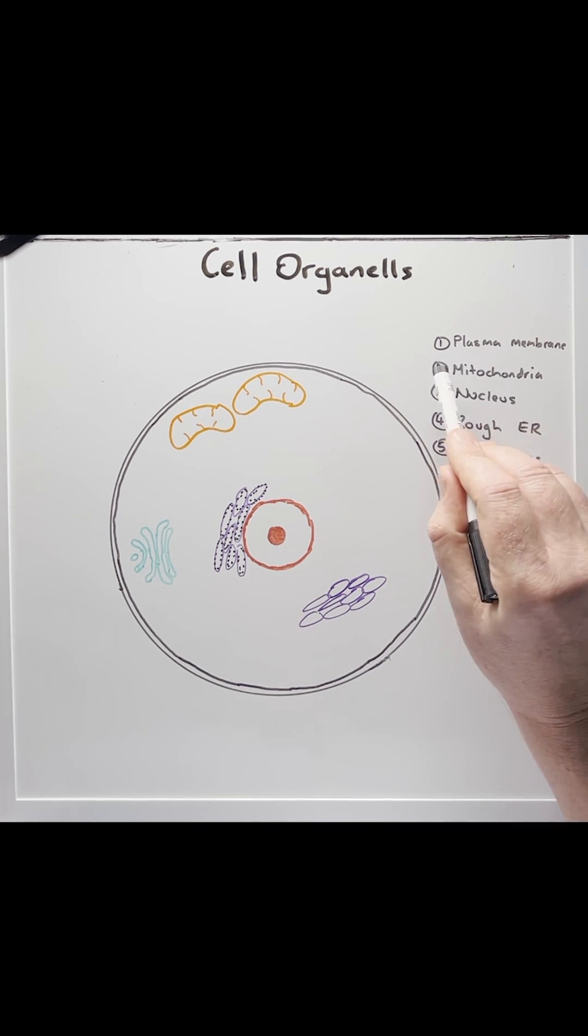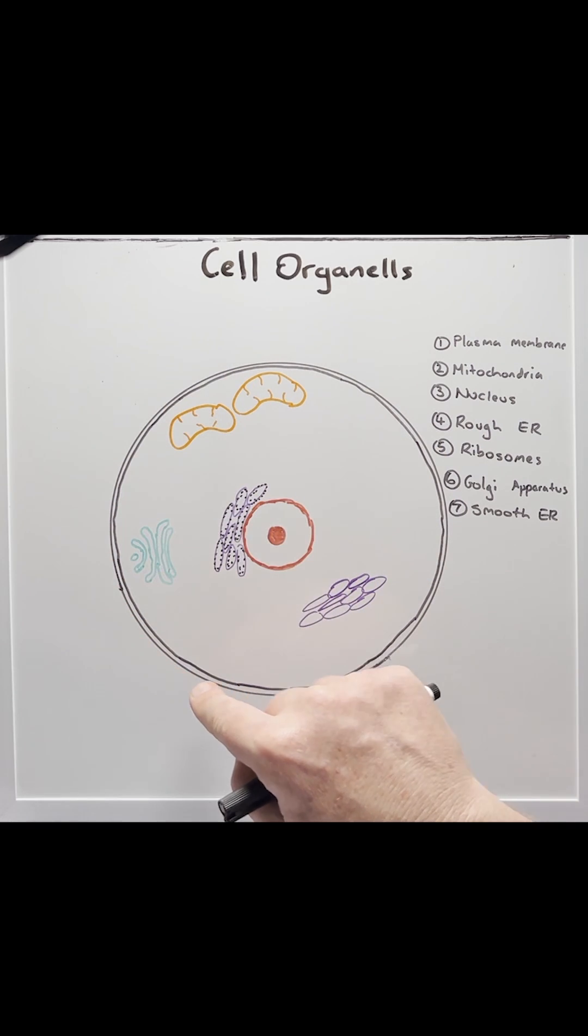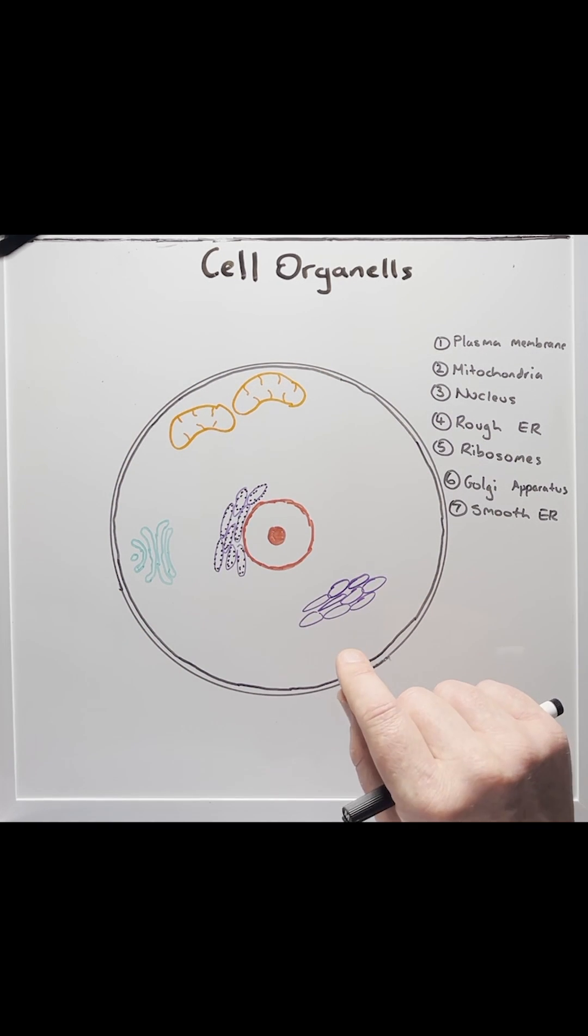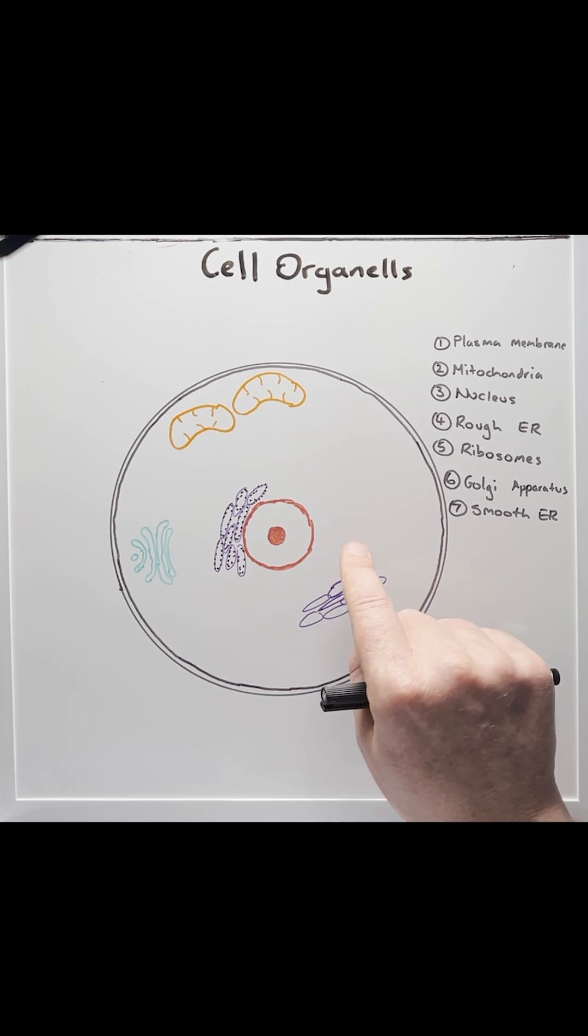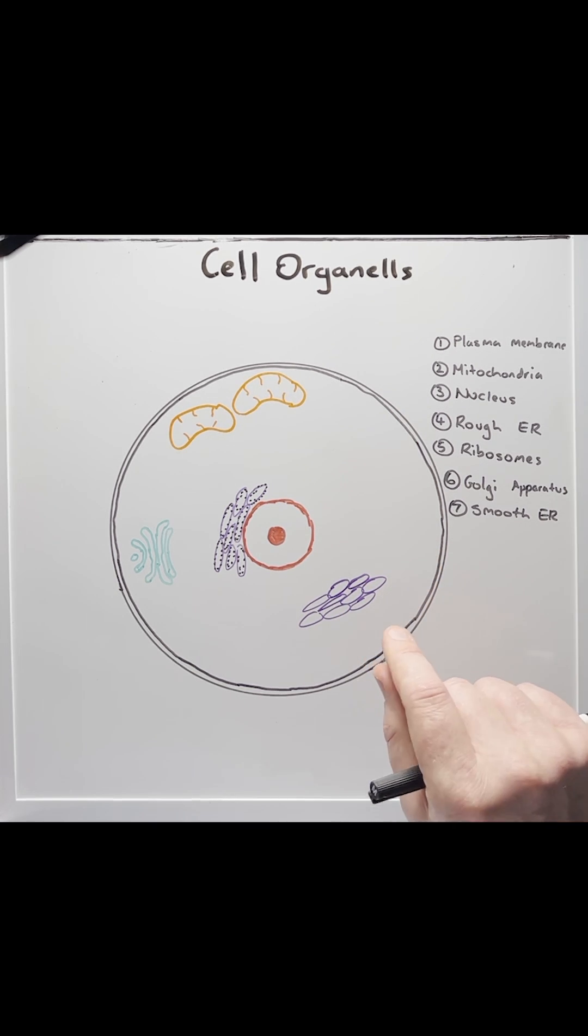Starting with number one, the plasma membrane, located on the outside of the cell. The plasma membrane is a phospholipid bilayer, which makes it semi-permeable. It functions as a barrier to separate the inside to the outside. It controls the flow of what can go in and out of the cell, but it also helps to identify the cell to our immune system.